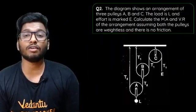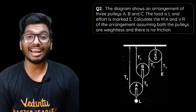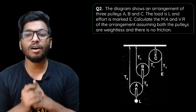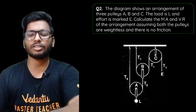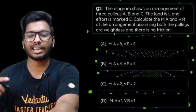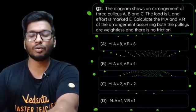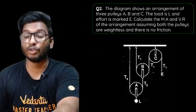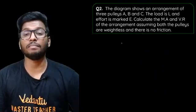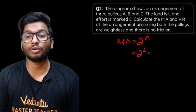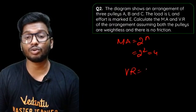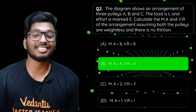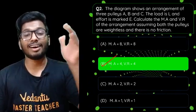Second question: the diagram shows an arrangement of three pulleys A, B, and C. The total load is L and the effort is marked E. Calculate the mechanical advantage and velocity ratio of the arrangement assuming pulleys are weightless and there is no friction. Options: MA=8 VR=8, MA=4 VR=4, MA=2 VR=2, or MA=1 VR=1. The diagram shows two mobile pulleys and one fixed pulley. So MA = 2^n = 2² = 4, and VR = 2^n = 2² = 4. The answer is option B: mechanical advantage 4, velocity ratio 4.